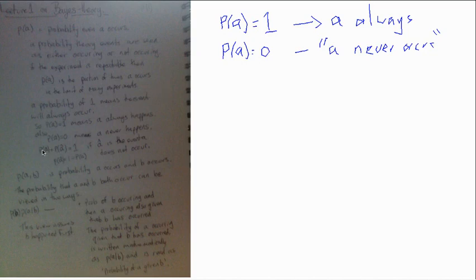And then, if we call A bar, A with a little hat in it, the event, the opposite event to A. So this is A not occurring. Then P of A bar is just the probability that A doesn't occur.